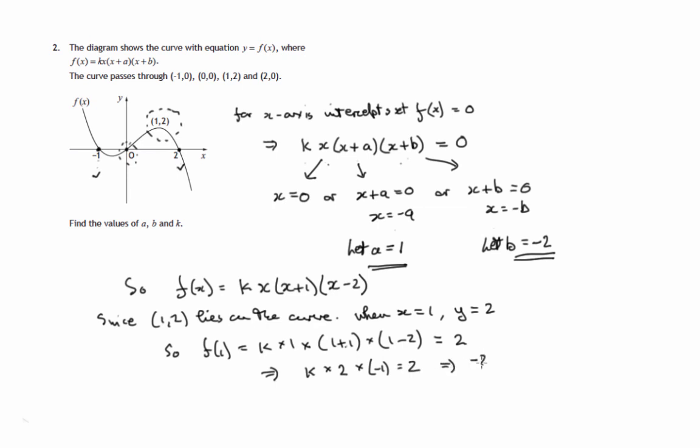So k times negative 2, that's negative 2k equals 2. Therefore, k equals, divide both sides by negative 2, k equals negative 1. So there's the value of k.